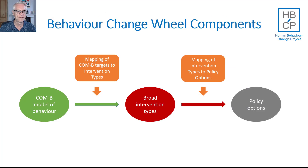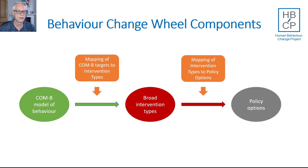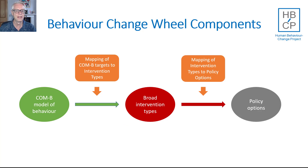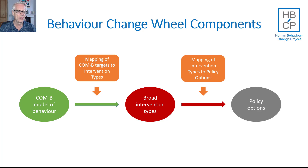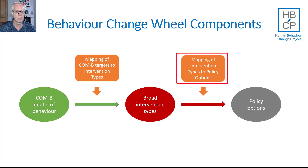The Behaviour Change Wheel has five components. The COM-B model provides your starting point for understanding what causes behaviours and what needs to change. That leads to decisions about broad intervention types — education, persuasion, and so on. That then leads to decisions about how you're going to implement these in terms of policy options, whether it's legislation, regulation, providing a service, or so on. The two additional components are the mappings: COM-B targets to intervention types, and intervention types to policy options.